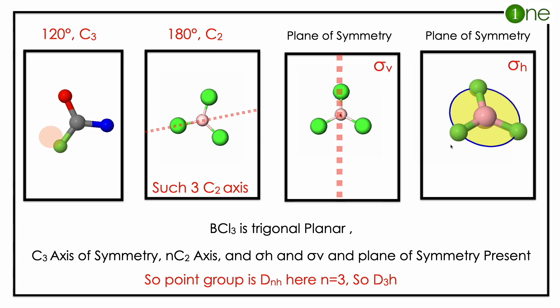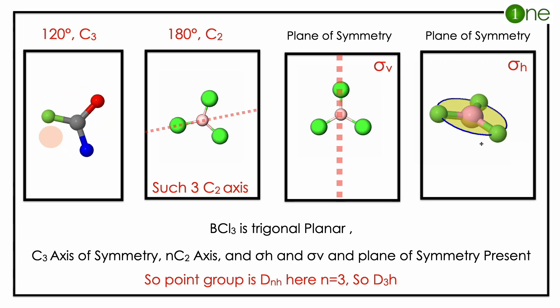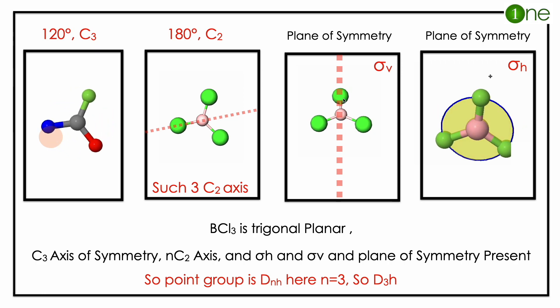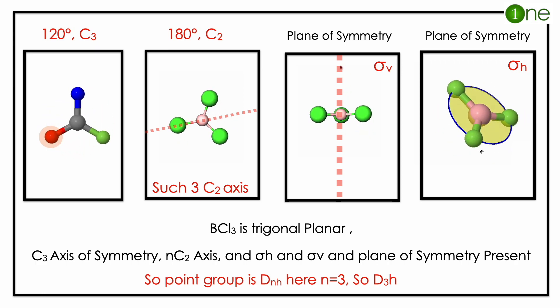And you have a plane of symmetry which is sigma h, meaning horizontal to the principal axis. It is like all atoms in a plate, so you have a single plane with all atoms. It's a plane of symmetry called sigma h.